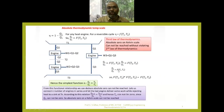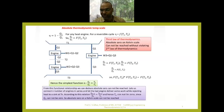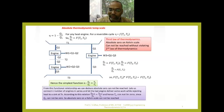Let us go to the absolute thermodynamic temperature scale. Whenever we deal with temperature measurements, we have various temperature measurement scales like Celsius, Fahrenheit, Rankine, Kelvin, and other new temperature scales. The freezing point and boiling point temperatures are very important. Celsius takes the freezing point as 0 degrees centigrade and the boiling point of water as 100 degrees centigrade at atmospheric pressure conditions.